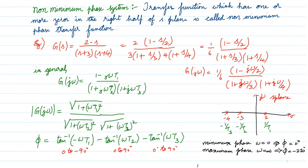Next we move to a system called the non-minimum phase system. A non-minimum phase system has one or more zeros in the right half of the S plane. Remember: zeros can be in the right side, but poles cannot — if poles are in the right side, the system becomes unstable. For a non-minimum phase system, one or more zeros can be in the right side.